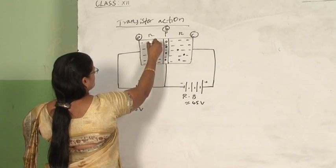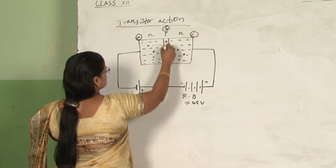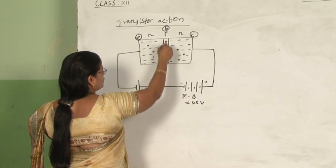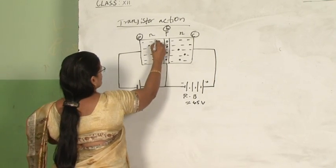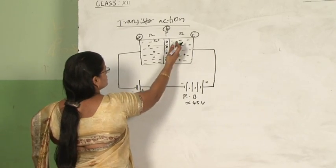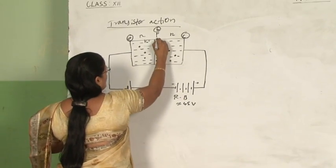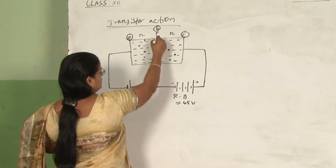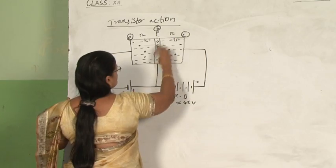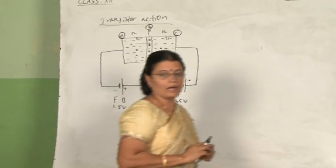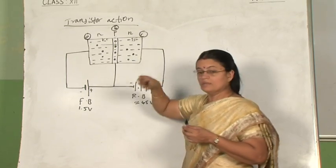When electrons repelled from the emitter side are moving towards the base region, you will see there are many holes present, so there will be electron-hole recombination. Suppose 100 electrons are moving from the emitter section towards the base section — we also know that the base is lightly doped — so only 5 electrons undergo recombination and 95 electrons will come towards the collector section.